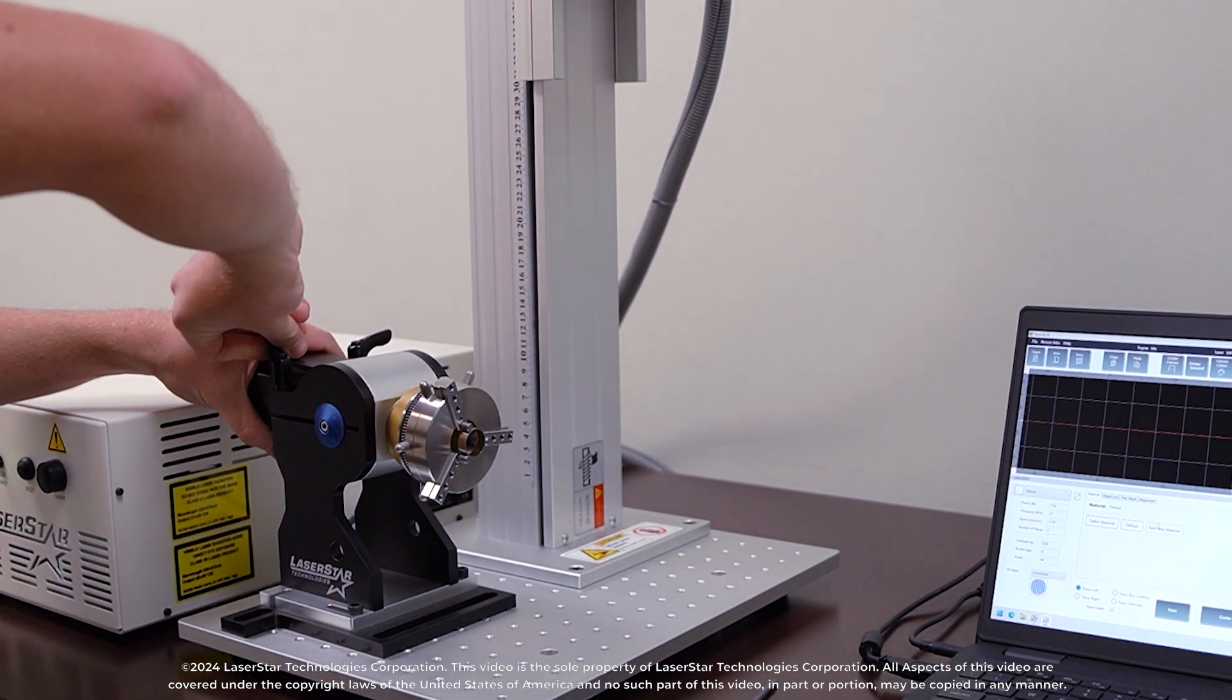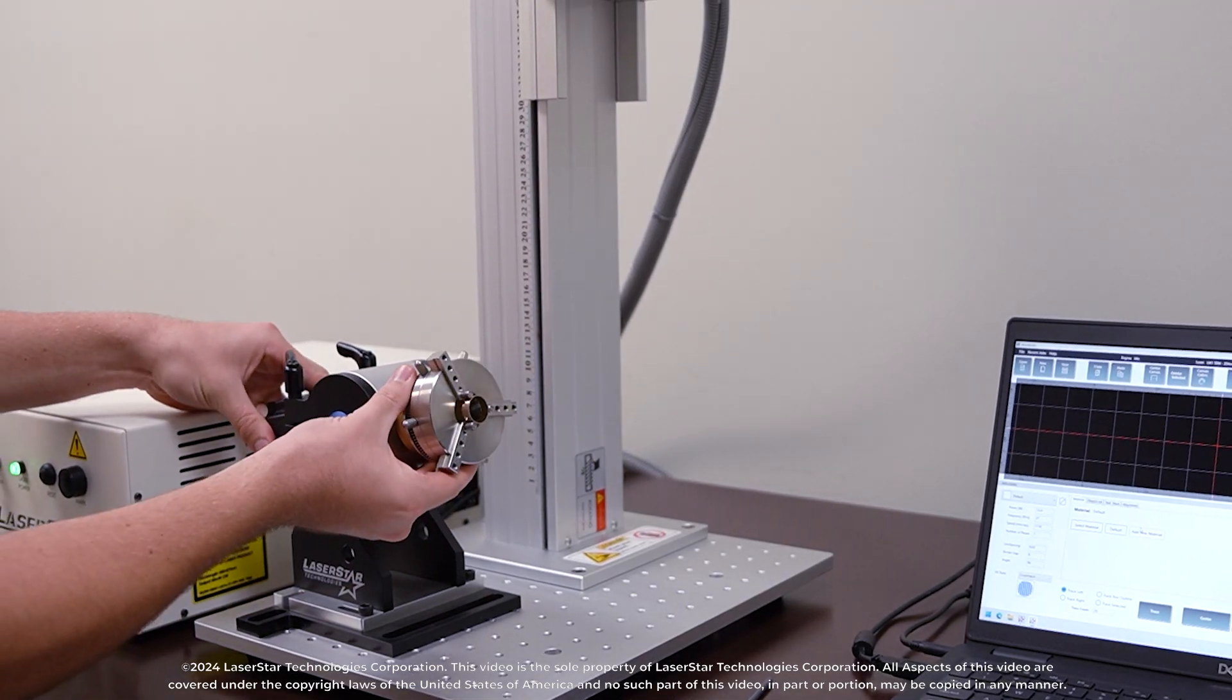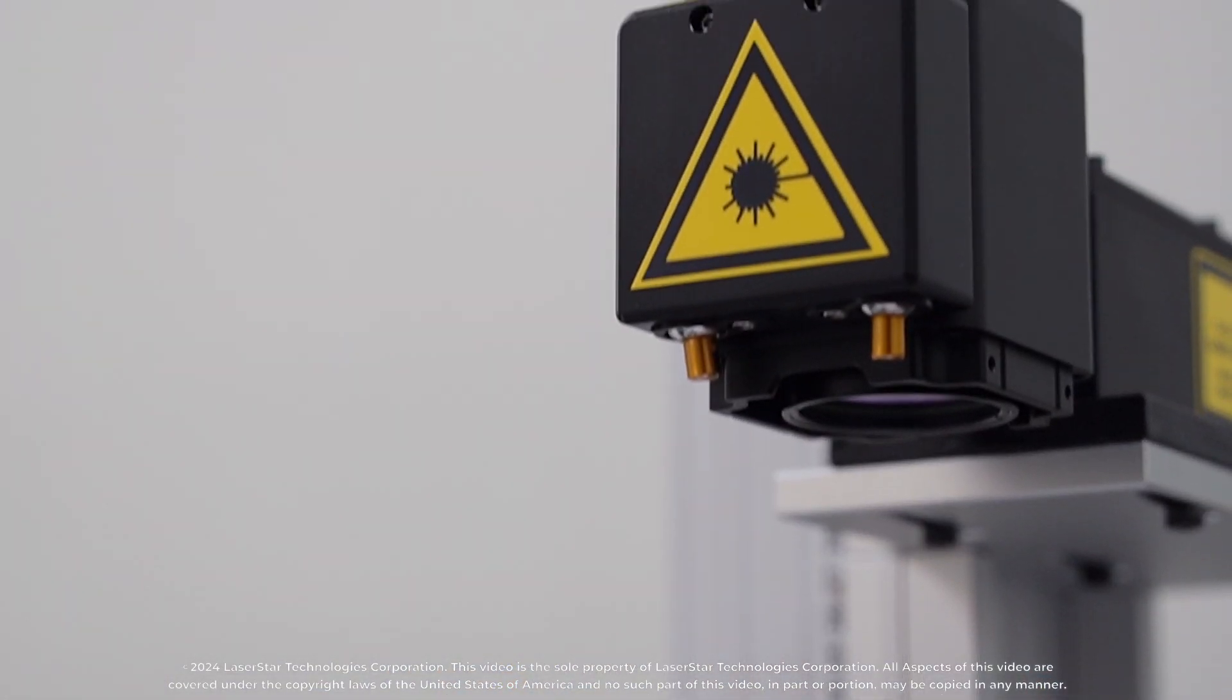The plug and play rotary sets up quickly and is easily adjusted, making marking on cylindrical objects a simple but precise process.